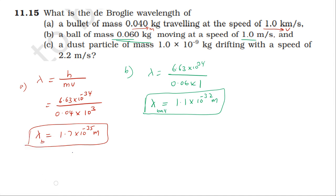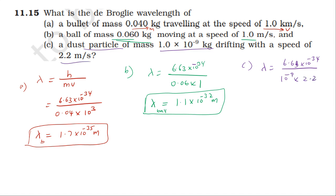For the third case, Planck's constant is 6.63 × 10⁻³⁴, divided by mass 10 power minus 9 kilogram, into speed 2.2 meters per second. Lambda equals 3 × 10⁻²⁵ meter. This last case is the dust particle — that is the de Broglie wavelength answer.